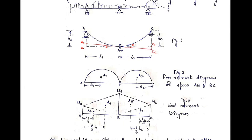To draw the bending moment diagram of the continuous beam, we first make the free moment diagram and the end moment diagram, then superimpose them to get the final bending moment diagram. For the free moment diagram, we consider the span as simply supported and apply the same external loading. The bending moment obtained under these conditions is the free moment diagram.